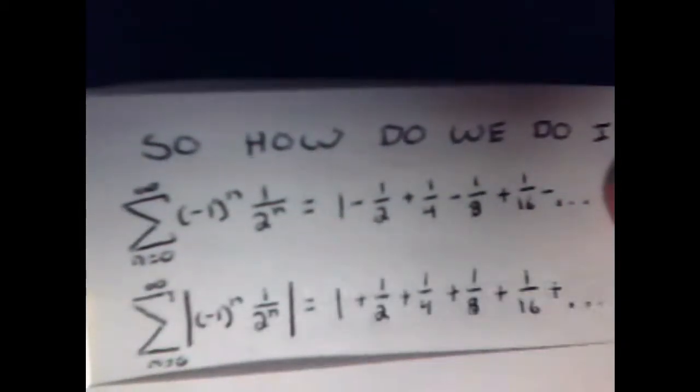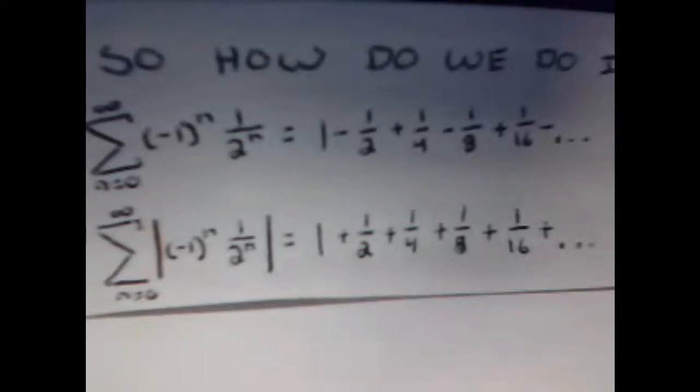When you plug in n equals zero, any constant to the zero equals one, so one divided by one equals one. Plugging in one gives two to the one equals two, so it's one-half, and it keeps going like that. A good strategy is to first look to see if it's absolutely convergent, because if it is absolutely convergent, then it is also conditionally convergent, so it only makes sense to do that part first.